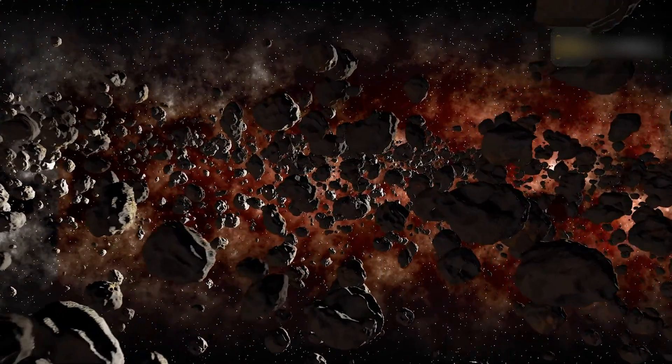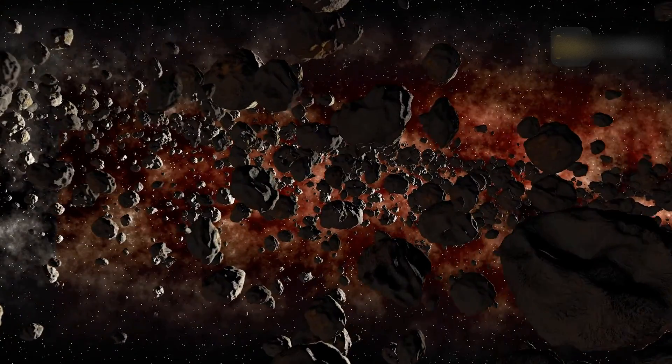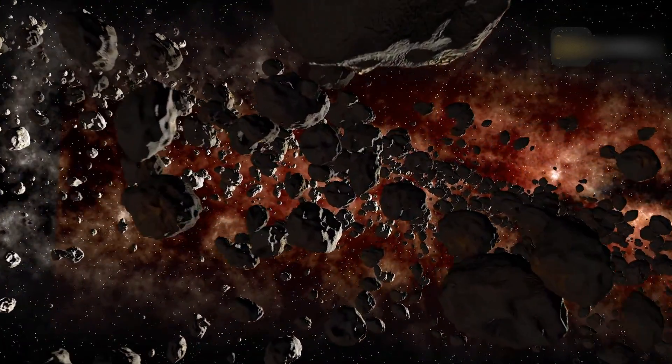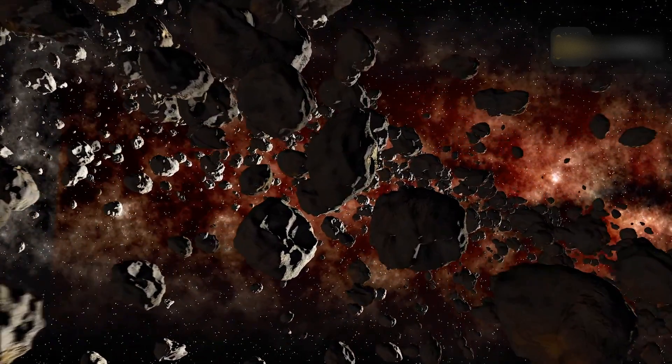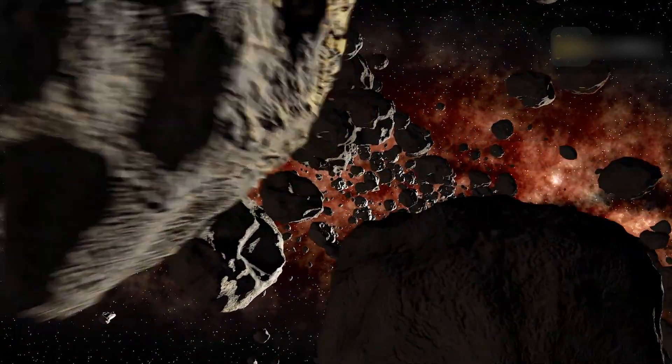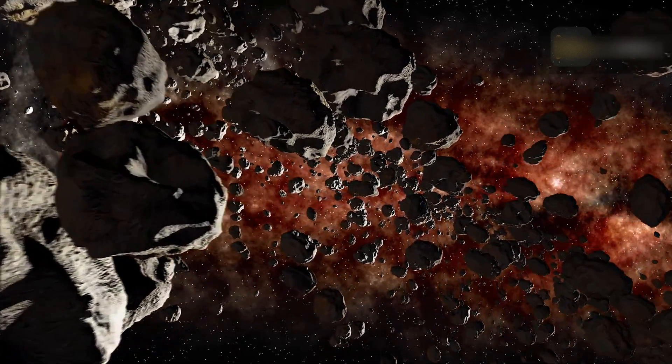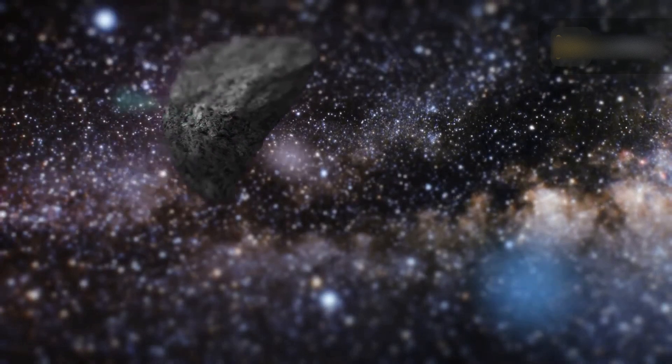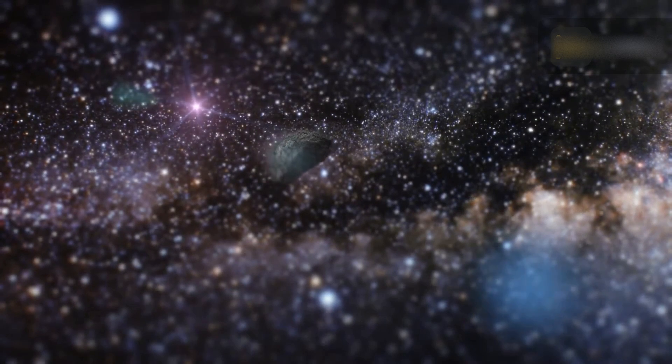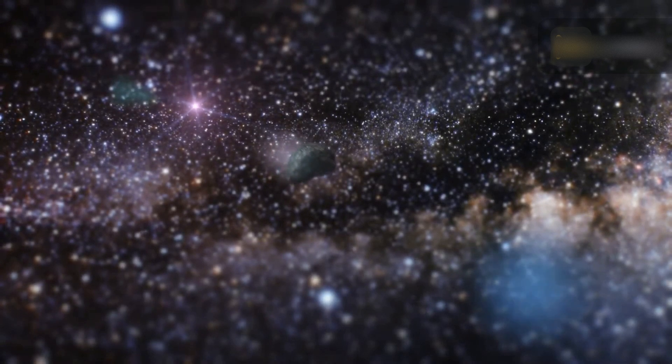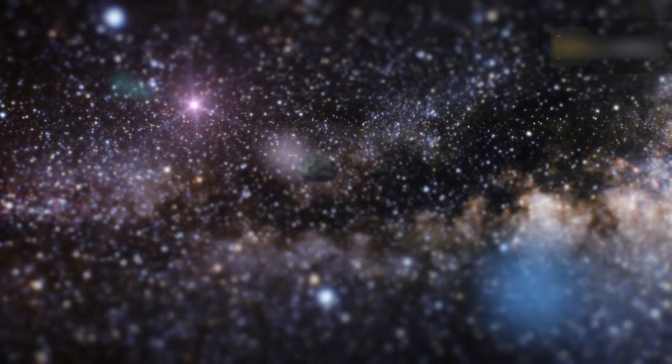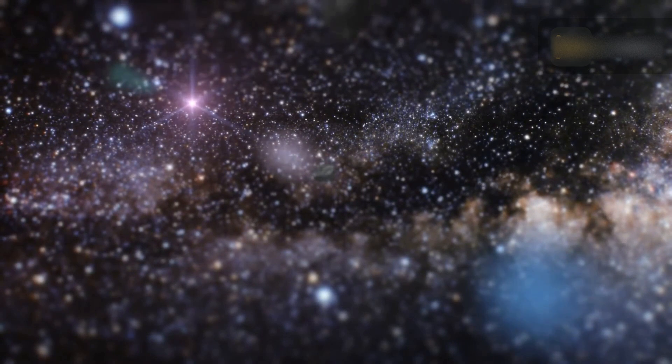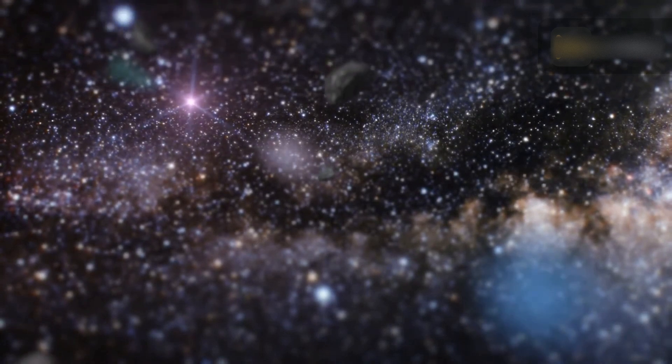An asteroid is a small rocky object that orbits the Sun. These objects are remnants from the early formation of the solar system, and they are composed primarily of minerals, metals, and other elements. Most asteroids are found in the asteroid belt, a region of space located between the orbits of Mars and Jupiter. However, they can also be found throughout the solar system. Asteroids vary in size from tiny boulders to objects that are several hundred kilometers in diameter. The largest asteroid in the asteroid belt is Ceres, which is about 590 miles, 940 kilometers, in diameter and is classified as both an asteroid and a dwarf planet.